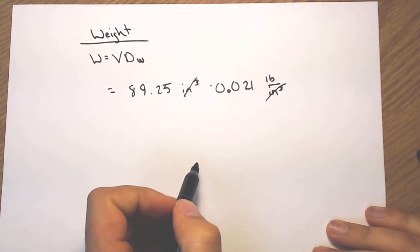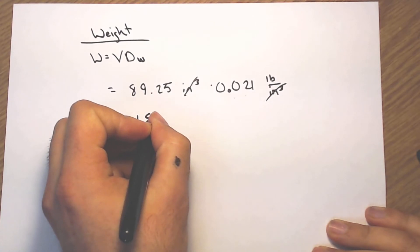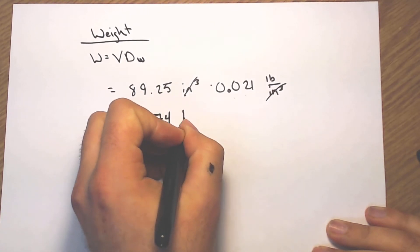Inches on top, inches on bottom, so they're going to end up canceling. And that gets you 1.874 pounds.